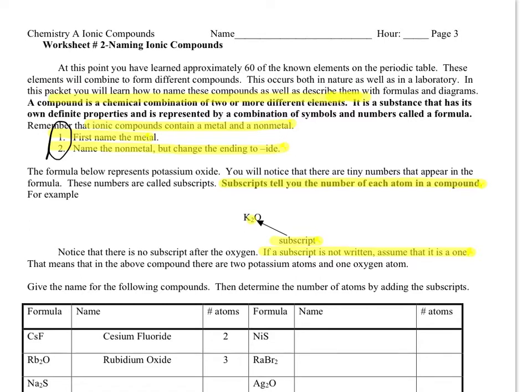If we look at this example down here, this is potassium—that's the metal—oxide. It was oxygen but we've changed it to oxide. The other thing that you might notice is that there's this